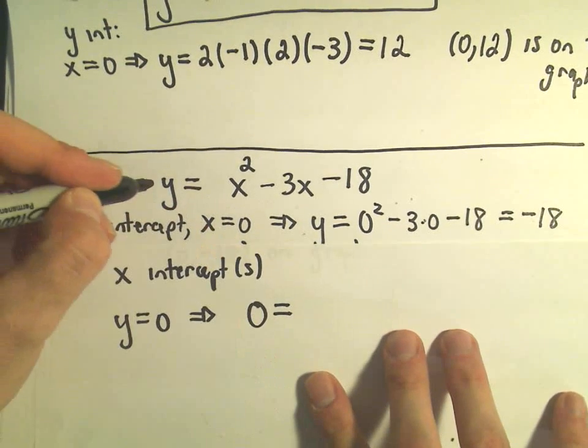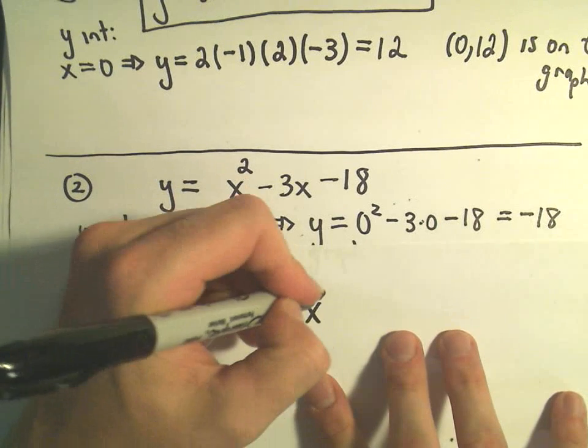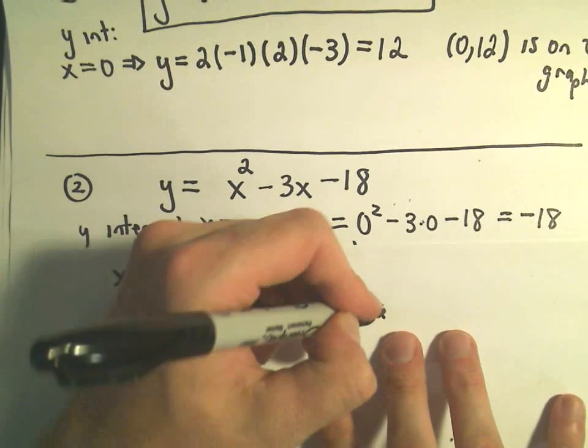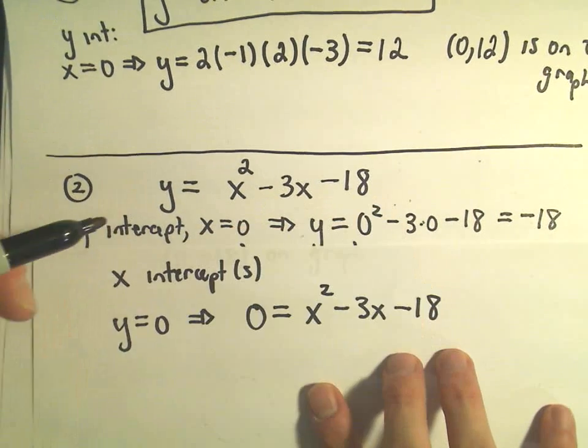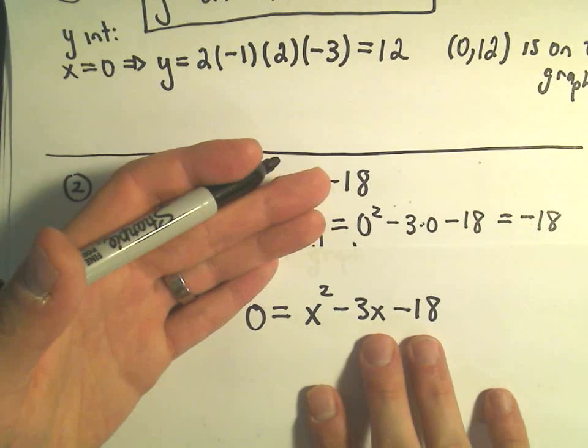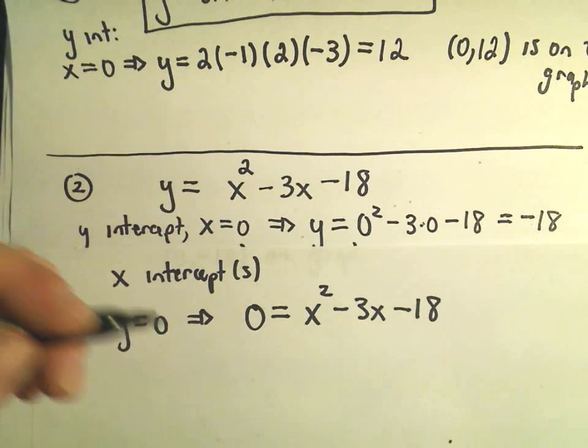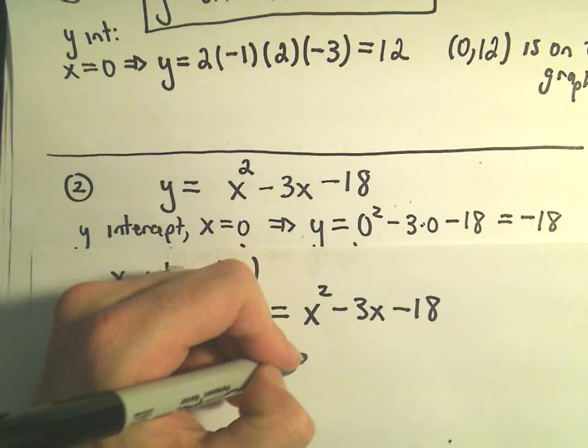So we have zero on the left side equals x squared minus 3x minus 18. So again now basically I've got a quadratic equation I have to solve. Let's see, hopefully this factors.